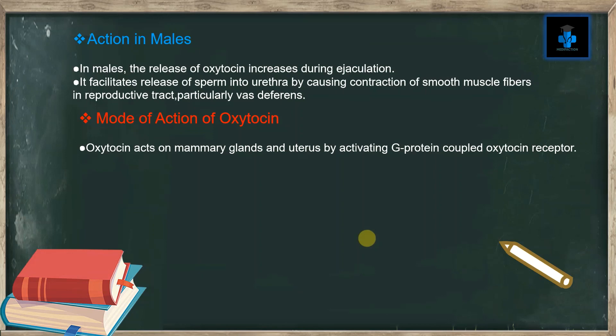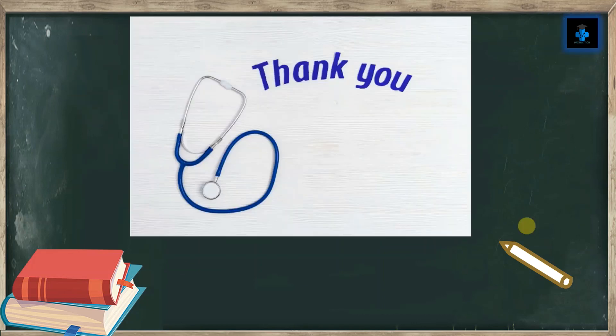Regarding the mode of action of oxytocin: oxytocin acts on the mammary glands and uterus by activating a G protein-coupled oxytocin receptor. Hope you have understood the video — like, subscribe, and press the bell button for more videos. Thank you for watching.